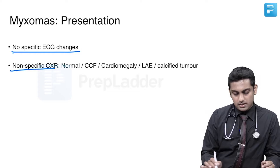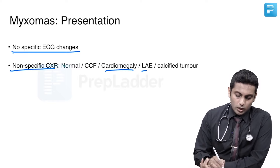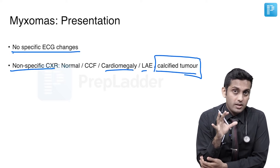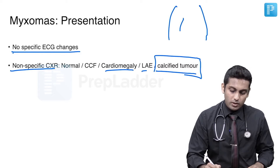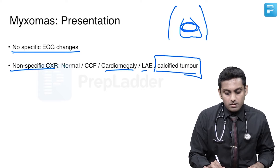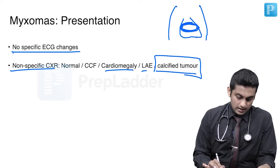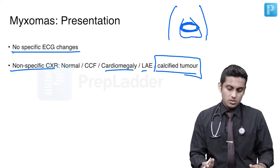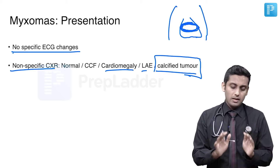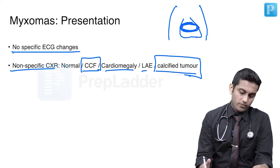The chest X-ray is non-specific. There could be cardiomegaly or left atrial enlargement, which could be due to mitral stenosis, mitral regurgitation, or this tumour. A calcified tumour is rare but possible; calcifications in the region of the left atrium on chest X-ray — the left atrium being a posterior structure — could be a sign of left atrial myxoma. It is difficult to pick up as it requires a precisely exposed film. The X-ray could also show a pulmonary edema-like picture resembling congestive cardiac failure.